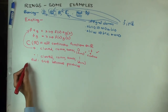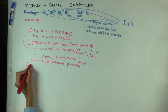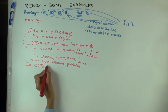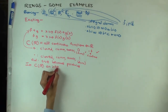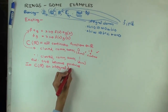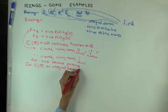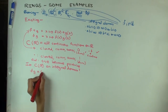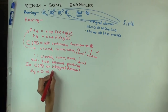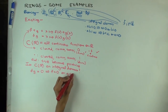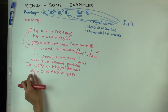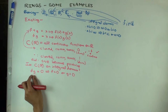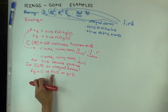Is C(R) an integral domain? What do we want to check? We want to check: if you have two functions whose product is the zero function everywhere on the real numbers, and they're both continuous, does that imply that one of the functions is zero everywhere? Is that true or not?